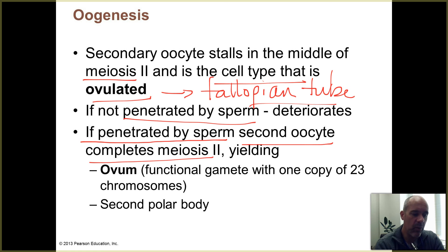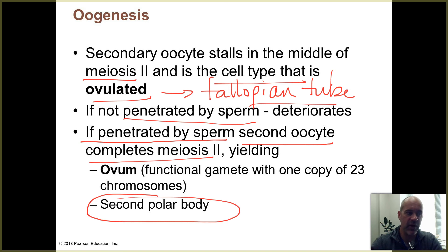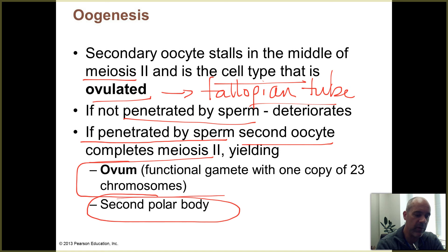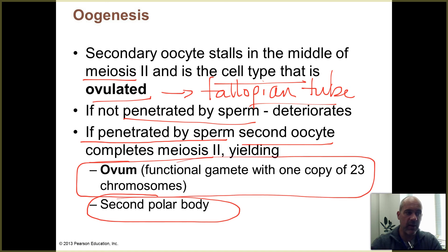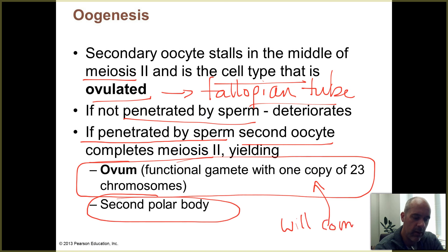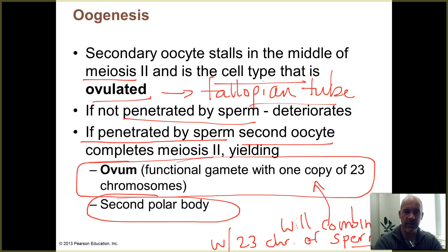One set of those chromosomes gets pinched off as a second polar body — again acting as a trash can for the extra set of 23 chromosomes. The remaining chromosomes stay with the original cell, which temporarily becomes an ovum: the mature egg cell with just one copy of each of the 23 chromosomes in an unduplicated state. Those 23 chromosomes combine with the 23 chromosomes of the sperm that has fertilized the ovum.